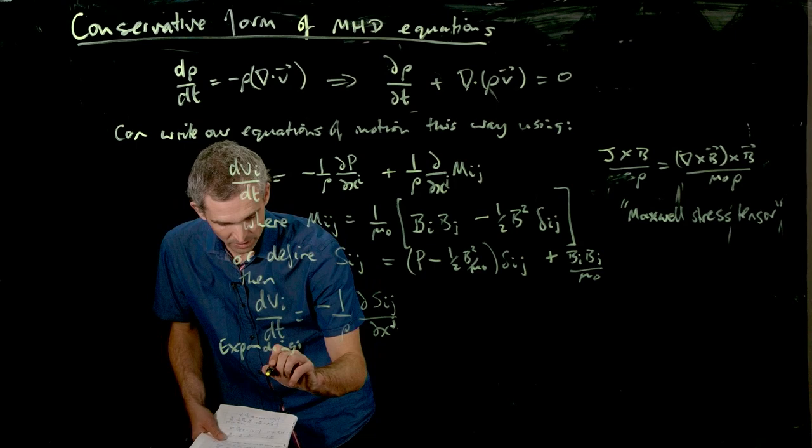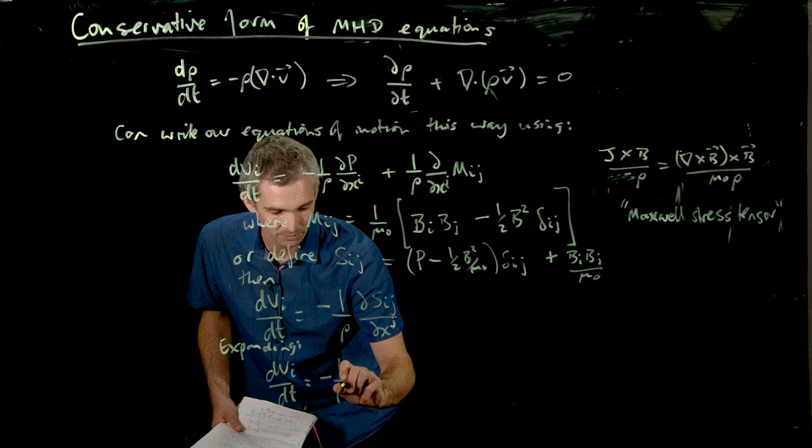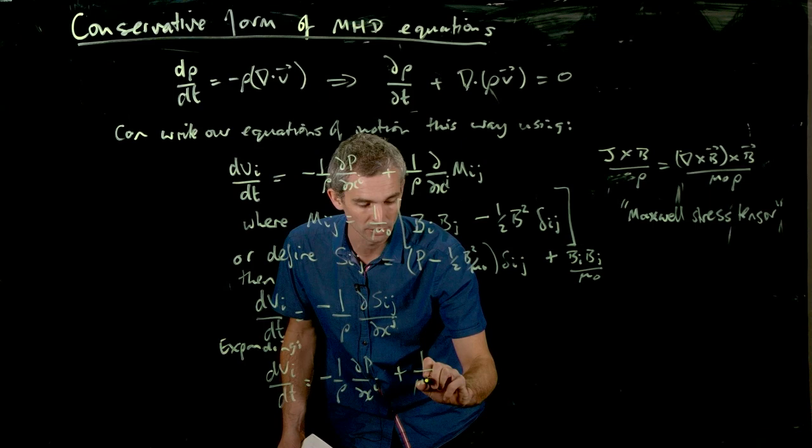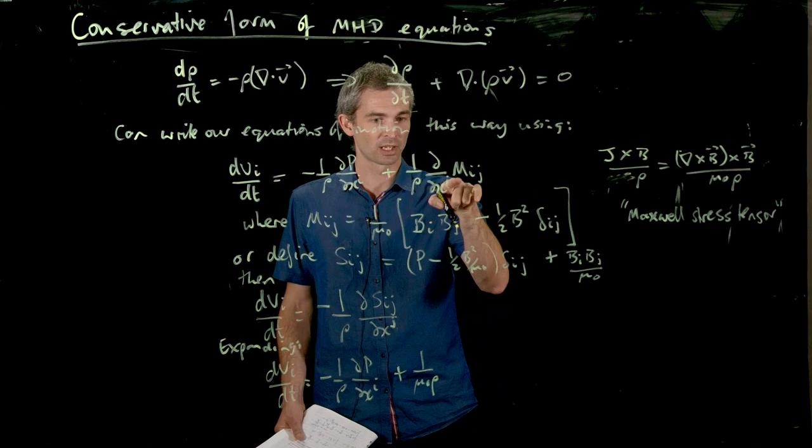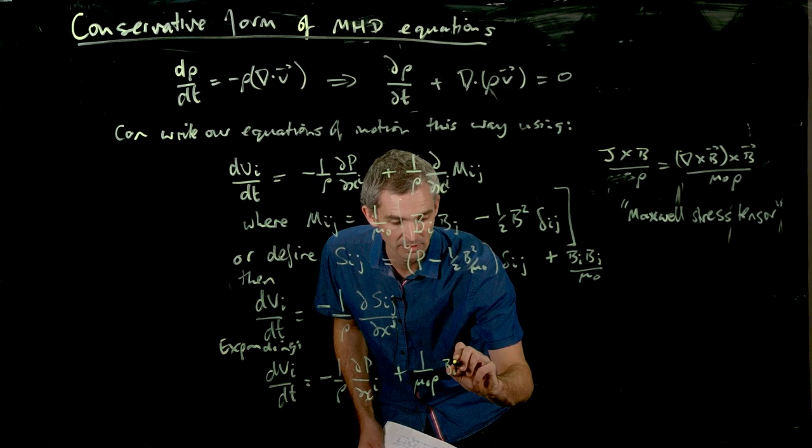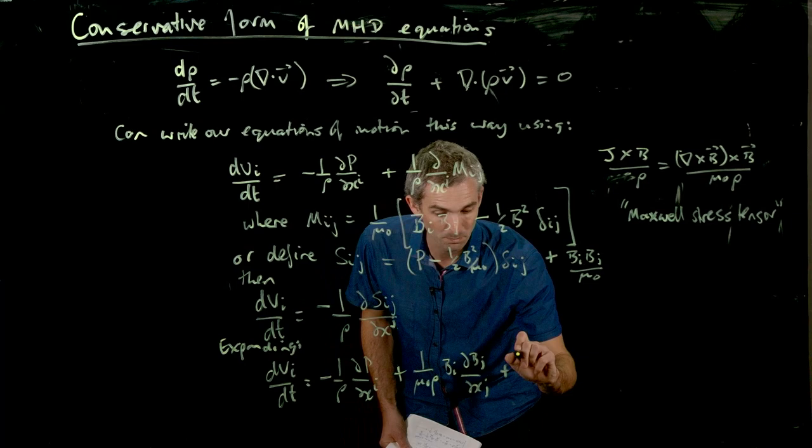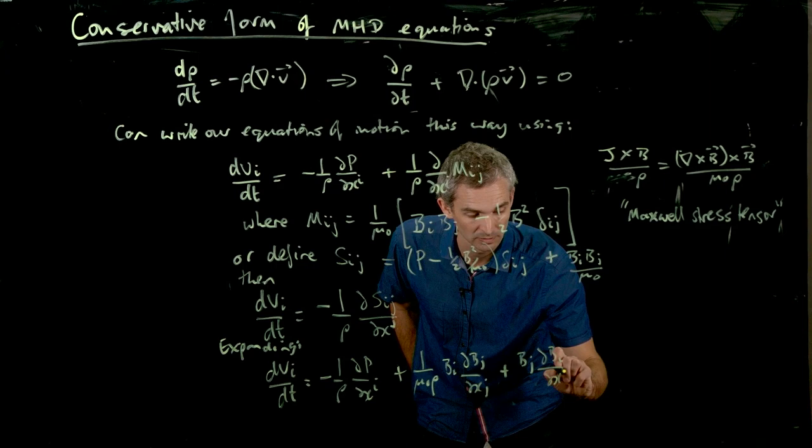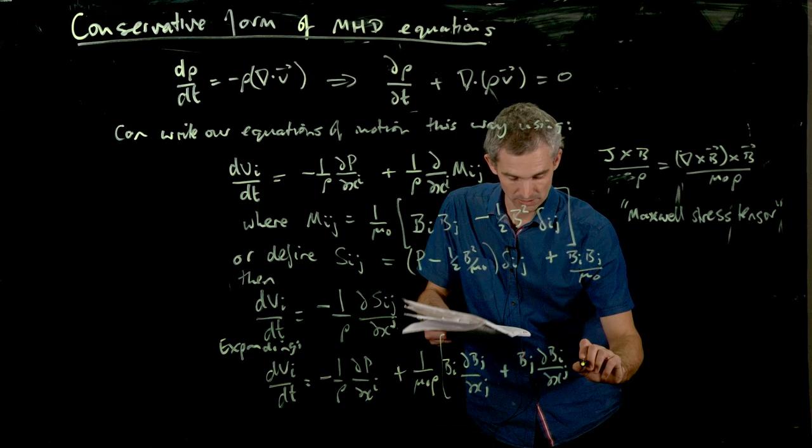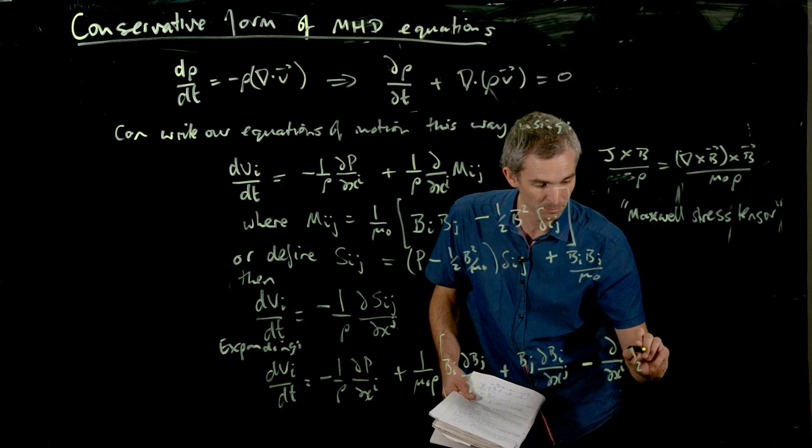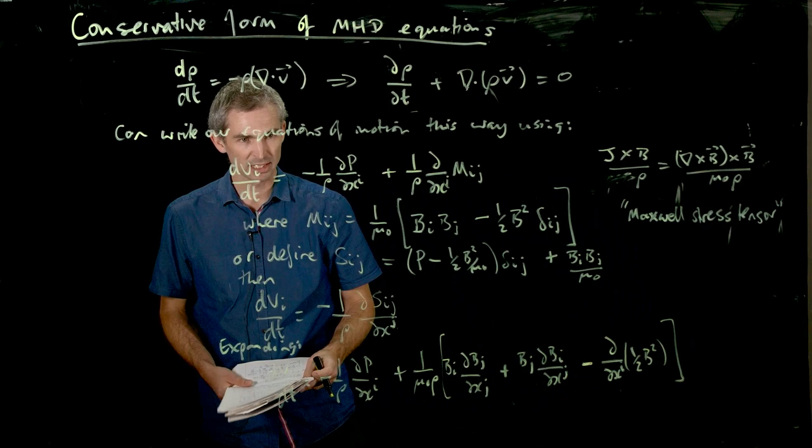Okay, so if we expand this out, so we get basically dv i dt. So let's just keep this term. So this is a minus one on rho dp dx i. Let's just do it with this form, so it's easier just to work it through. So we're going to get a plus one on mu naught rho. So this is going to be, now we've got a product rule here, so we've got to do a d dx j of bi. So we've got a bi dbj dx j plus a b j dbi dx j. Okay, so that's just that term done with the product rule. And then we've got, let's do this term. This is a d dx j, which becomes a d dx i, because of the delta i j of a half b squared.